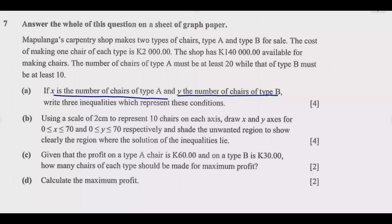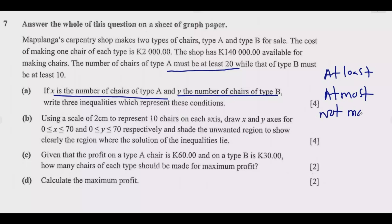The easiest is to start with the last sentence: the number of chairs of type A must be at least 20. 'At least' means 20 is the minimum — that's what it means. You need to understand the language. In linear programming you come across terms like 'at least', 'at most', 'not more than', and 'not less than' — you need to understand these.